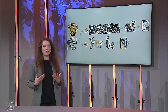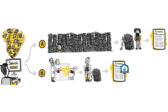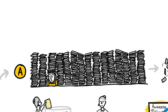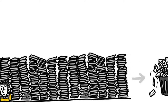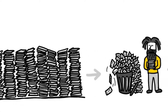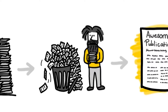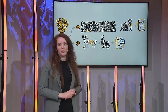Before I tell you more about ASReview, I want to talk about the traditional way of screening. Traditionally, you start with a search that returns maybe thousands of papers, and you have to screen the whole dataset. After that long and exhausting process, you end up with a small stack of papers that are actually relevant for your study, and then you write your publication.